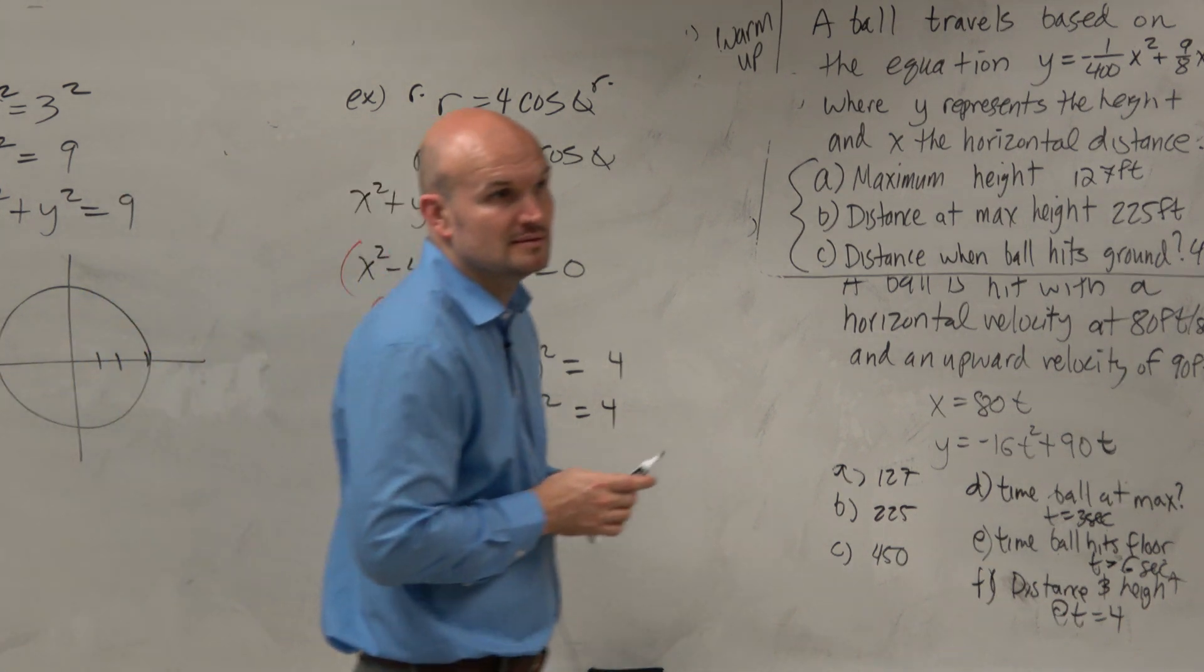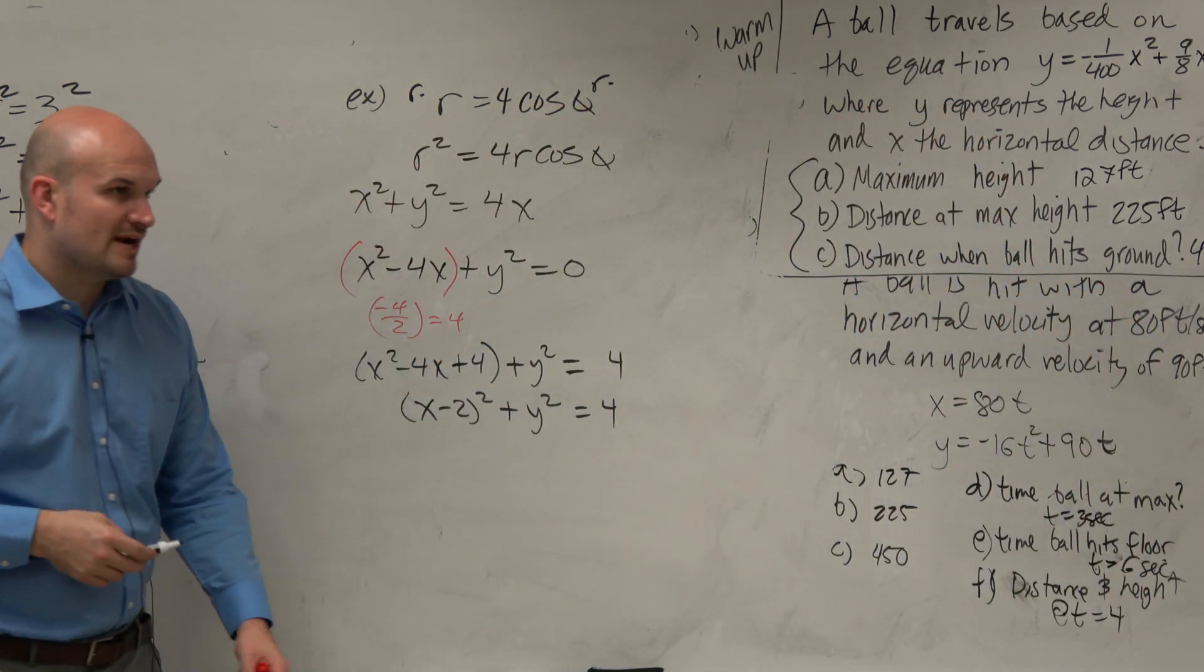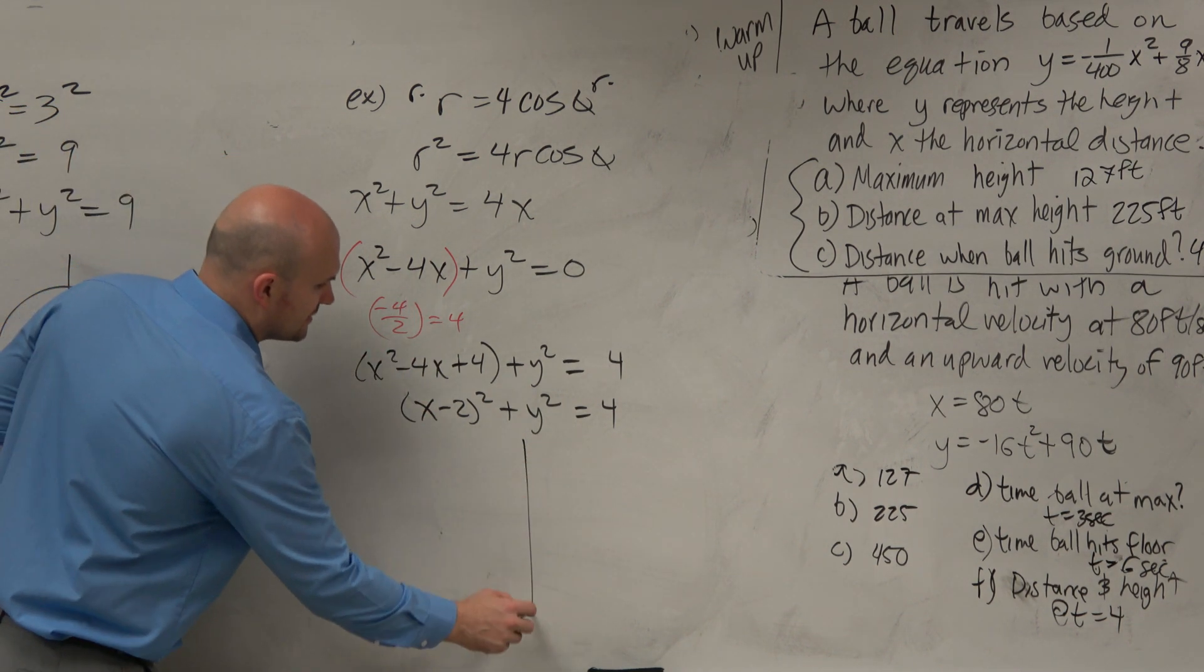Does anybody know what this is? Another circle? It is another circle that has a radius of 2 that is shifted two units to the right. So it looks something like this.